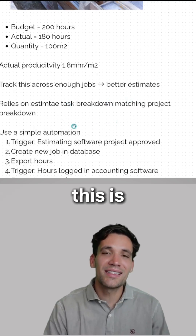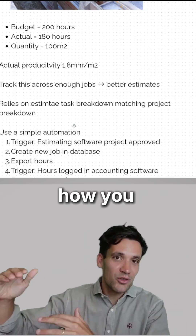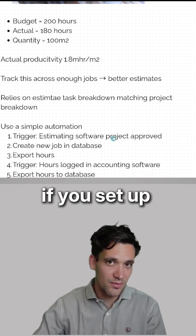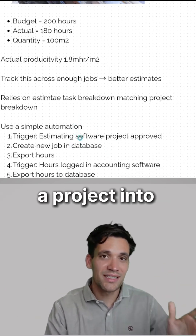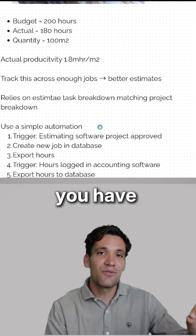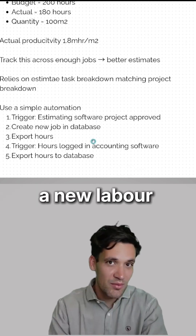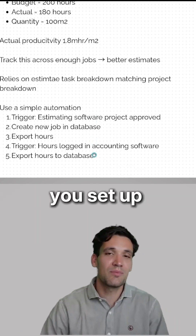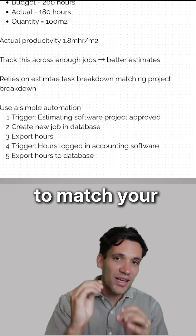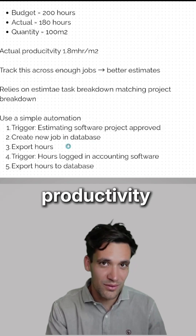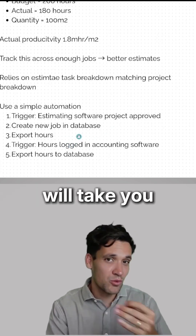The core principle behind this is how you break down your estimates and do your pricing needs to match how you track hours in your accounting system. If you set up your two systems like this, when you approve a job or put a project into execution, you have your budget hours match your accounting system hours. Then every time a new labor entry goes into the accounting system, you set up a database that stores the hours against that task to match your estimate hours, and over time you build your own productivity database and you can know for a fact how long different tasks will take you.